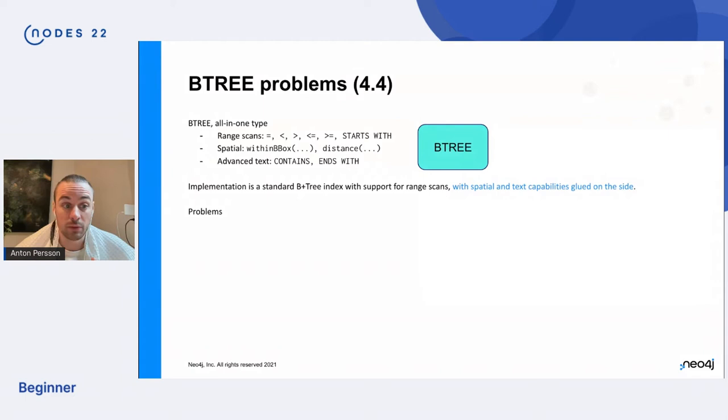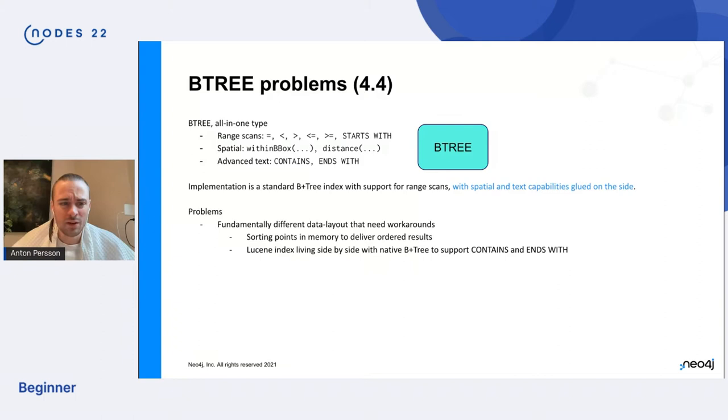However, the standard implementation of like the our native implementation of the B plus tree, the tree structure, it doesn't support those kind of queries like out of the box. So we've added the spatial and the text capabilities kind of glued on the side of the Btree. And this has some problems. For example, fundamentally, those parts have different data layouts. So we need to work around those in the code. For example, we need to sort points in memory to deliver ordered results.